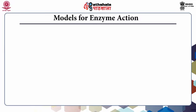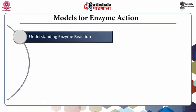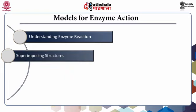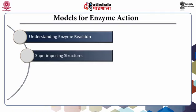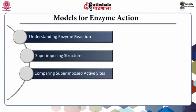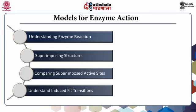The learning objectives in the present module include understanding basic steps for an enzyme-catalyzed reaction involving a single substrate and a single product. We will also cover superimposing two different structures of the same enzyme to achieve structural alignment for comparing superimposed active sites — one for the free enzyme and another bound to a ligand such as substrate, product, or transition state analog — so as to understand the induced transitions of the active site to bind these ligands.